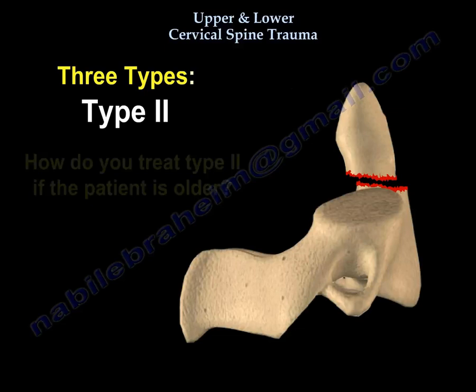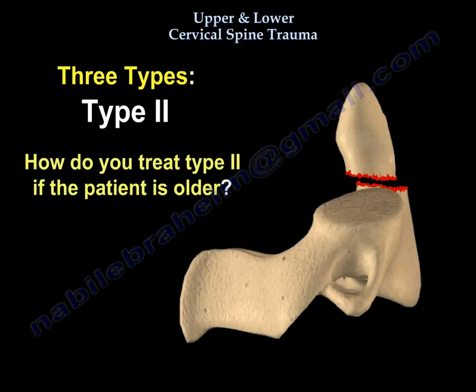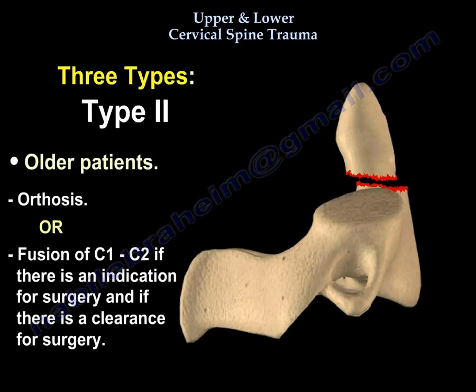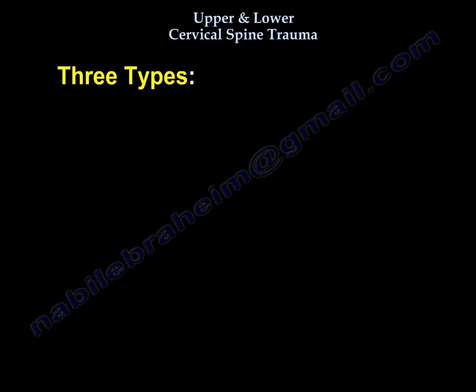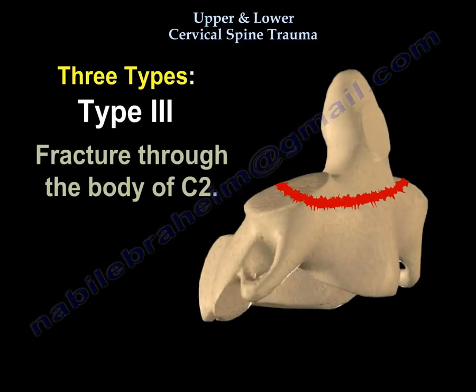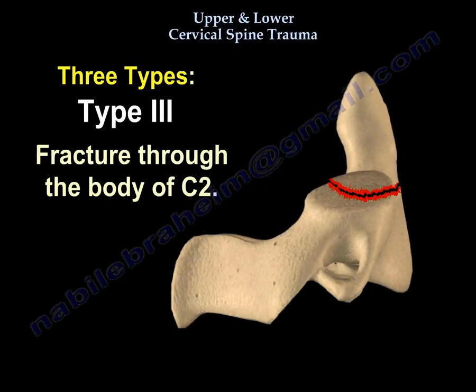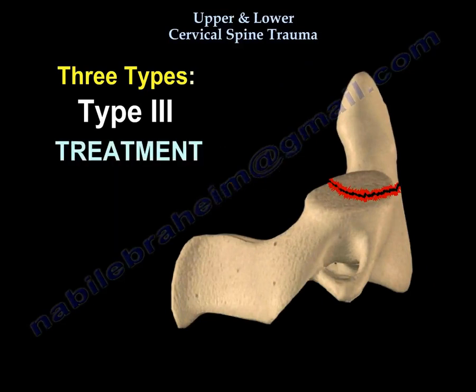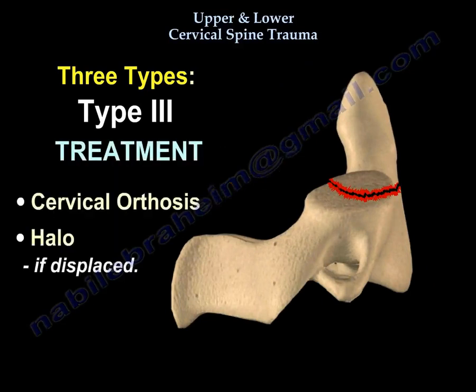How do you treat type 2 if the patient is old? Orthosis, or surgery for fusion of C1 and C2 if there is an indication and surgical clearance. For type 3 fracture, where it goes into the body, you treat it by rigid orthosis or halo.